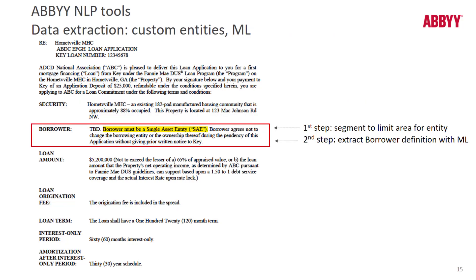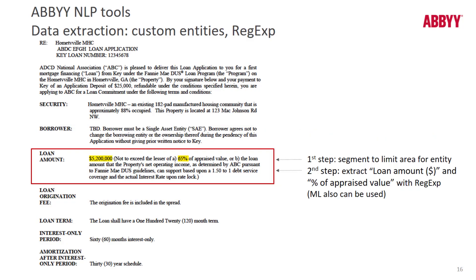When we refer to custom entities, we're talking about the fields we want to extract. For instance, highlighted here, we want to extract information about the borrower. First we limit the search area by defining a segment, then only within that segment do we perform the search for our entity. There are different approaches for extraction: machine learning involves marking up and training documents; we can also extract data using regular expressions placed in a script, as well as using dictionaries and NERs. Sample extraction scripts are available in the ABBYY help file.